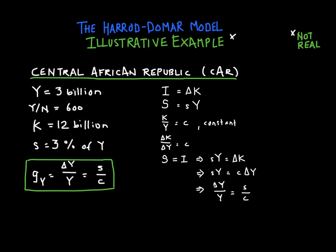The Harrod-Domar model assumes that saving equals investment, which means that the savings rate multiplied by output is equal to the change in capital. Because of the constant capital-output ratio, we can substitute C times change in Y, and rearrange to get our Harrod-Domar equation. So that's where that equation comes from.